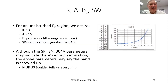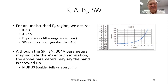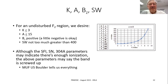For the K, A, B_z, and SW parameters, we want an undisturbed F2 region. We desire K to be less than or equal to 3, which translates to an A index less than or equal to 15. We'd like B_z to be positive, meaning the interplanetary magnetic field isn't coupling well into the Earth's magnetic field. If it's a little negative that's okay. We'd like solar wind to be not much greater than 400 kilometers per second. Even if solar flux, sunspot number, and EUV indicate enough ionization, the bands can still be disrupted if A, K, B_z, and solar wind aren't in the right range.